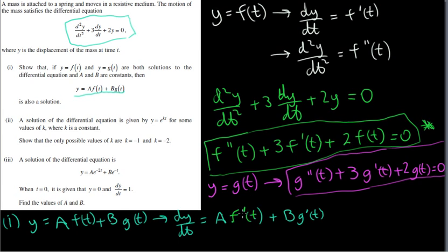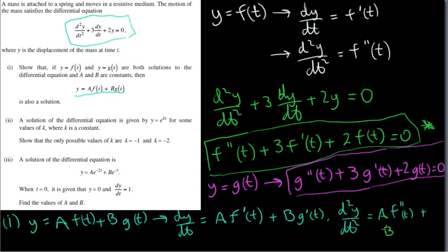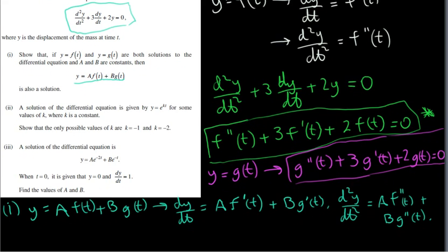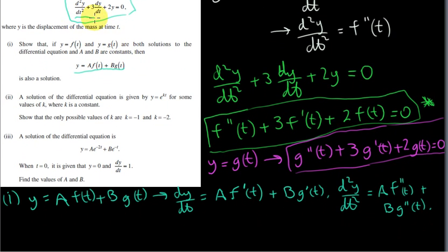You could write f′(t) as df/dt, but I'm going to use the prime notation. So that's dy/dt = a·f′(t) + b·g′(t). And similarly, for the second derivative, we have a times the derivative of f′(t) with respect to t, which is just f″(t), plus b times the derivative of g′(t), which is g″(t). And what we should now do is plug all that into the differential equation.